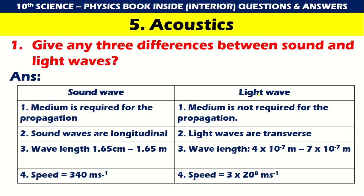Chapter 5: Acoustics. Three differences between sound and light waves: medium is required for the propagation of sound; medium is not required for the propagation of light. Sound waves are longitudinal and light waves are transverse. The wavelength of light is 4×10⁻⁷ to 7×10⁻⁷ m. The speed of sound is 340 m/s and the speed of light is 3×10⁸ m/s.